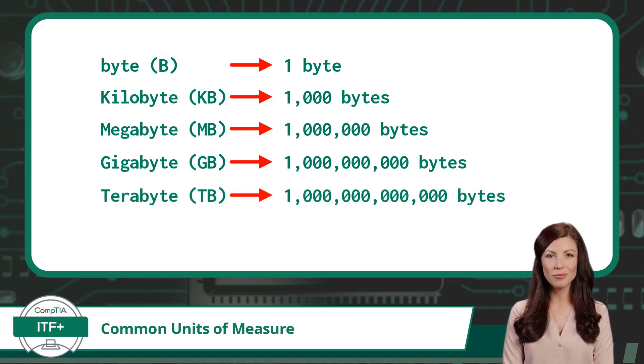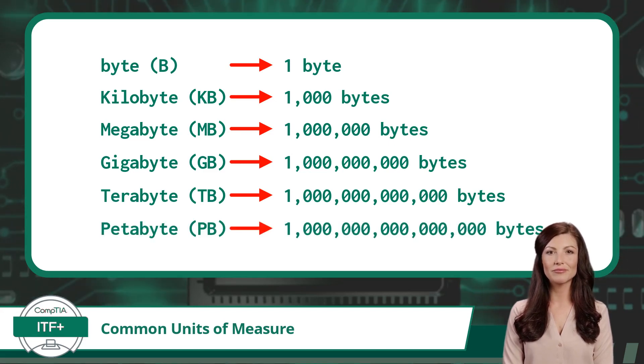And then there is peta. Peta means quadrillion, so a petabyte equals 1,000,000,000,000,000 bytes.